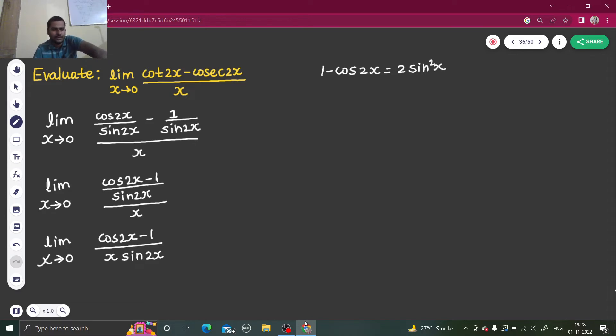So let's use that. Limit x tending to 0: If I take minus, it becomes 1 minus cos 2x divided by x sine 2x.